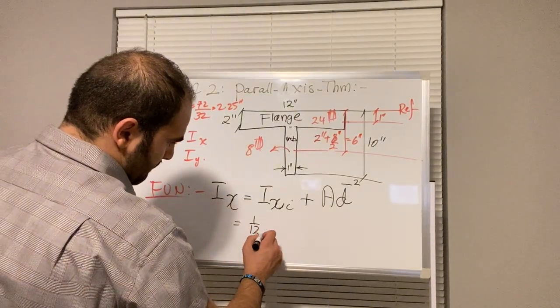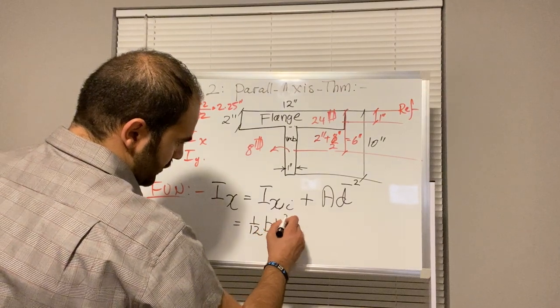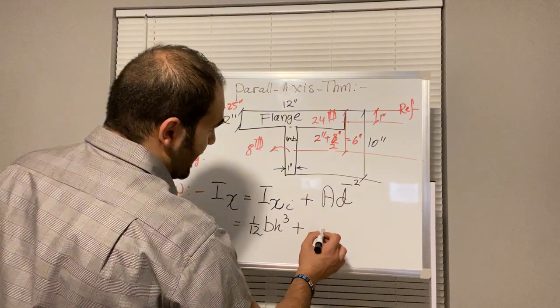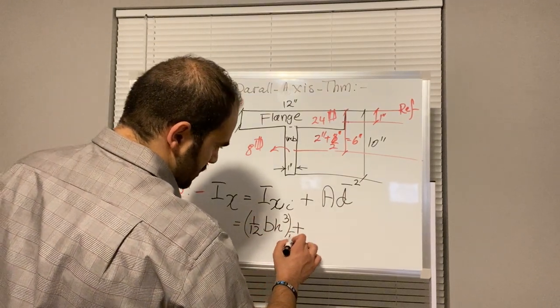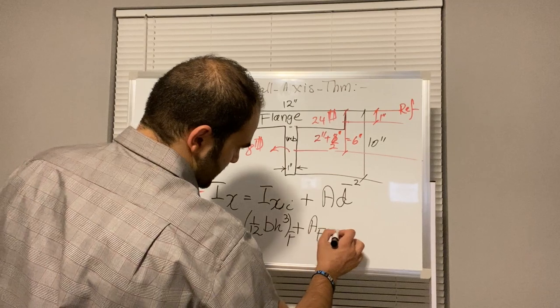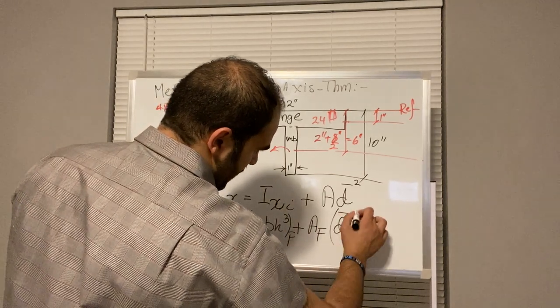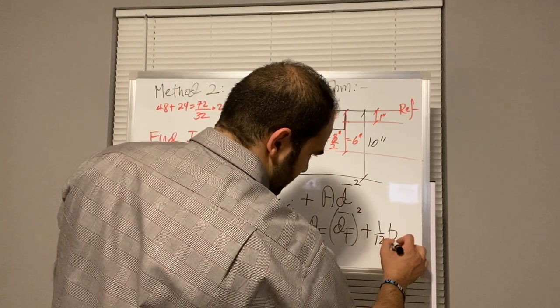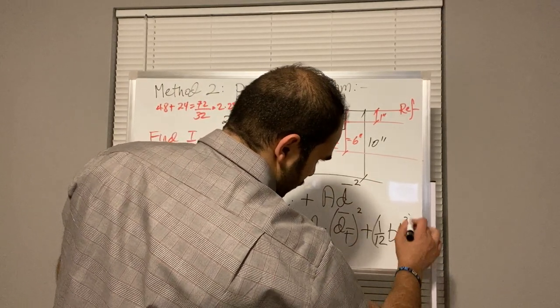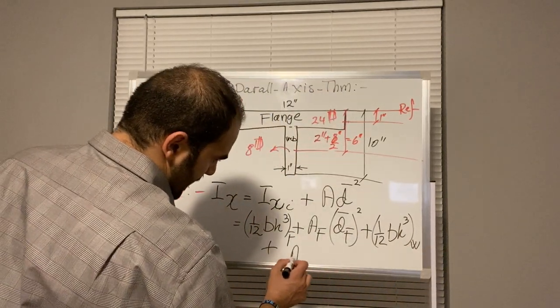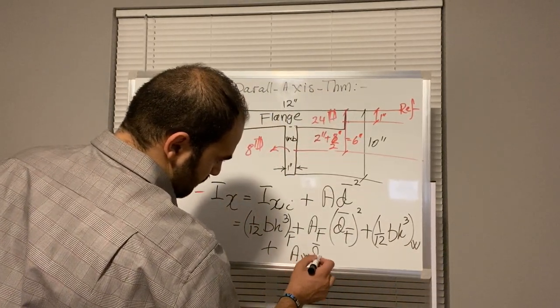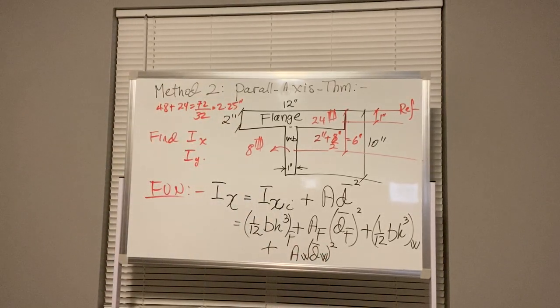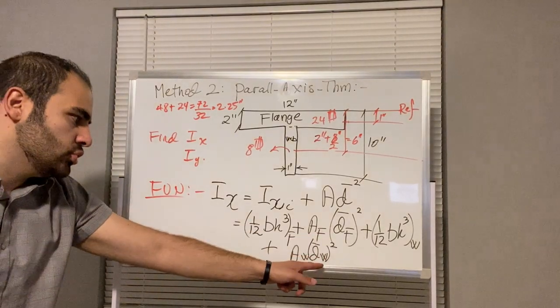This is 1 over 12 BH to the third. This is going to be A for the flange. Let's just call this as flange: A flange times D bar F squared.